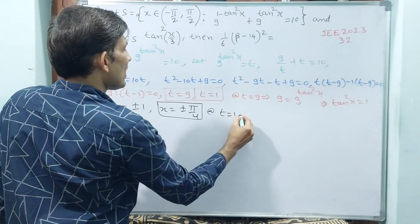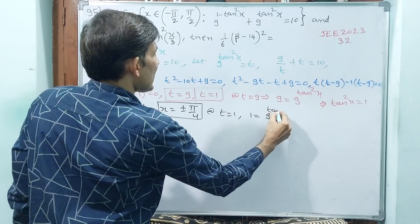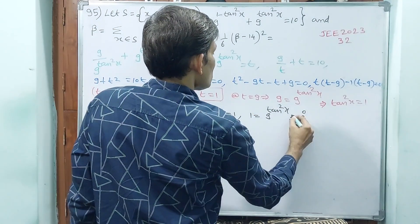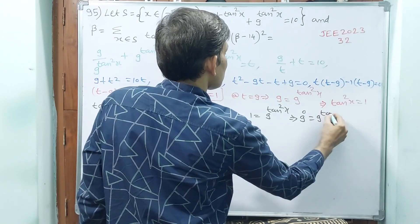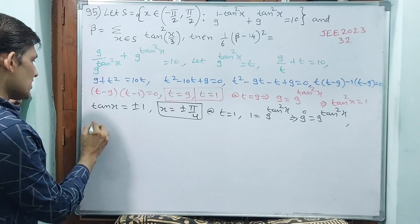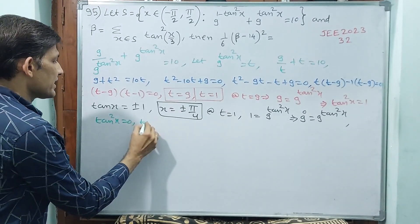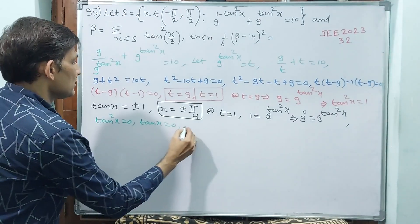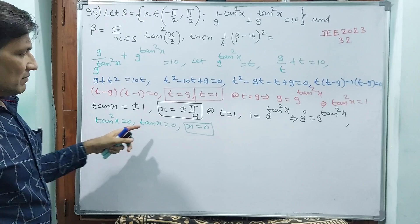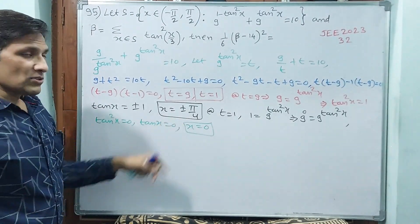For t equals 1: 1 equals 9 power (tan squared x), or 9 power 0 equals 9 power (tan squared x), so tan squared x equals 0, meaning tan x equals 0, therefore x equals 0. Because tan at x equals 0 is also 0. So now 3 values are there.